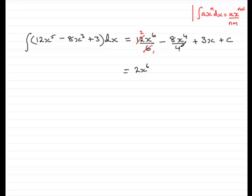When we come to the second term, 4 into 4 goes 1, 4 into 8 goes 2. So, we have minus 2x to the power of 4 plus 3x plus the constant of integration, c.